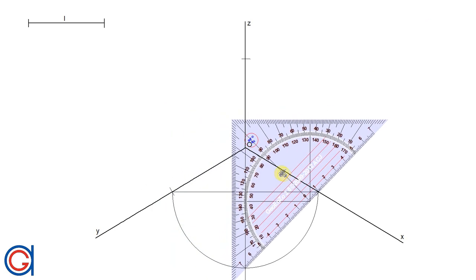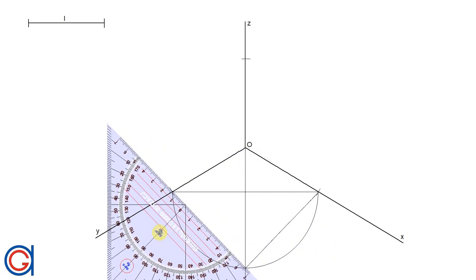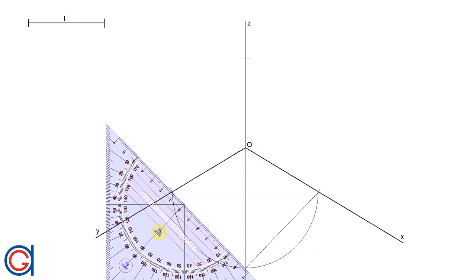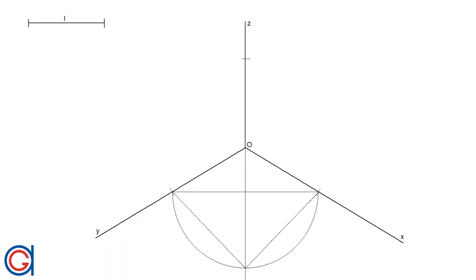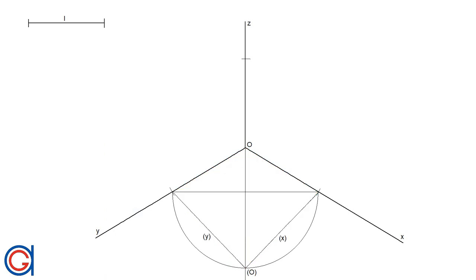Now we are going to join this point O in brackets with both ends of the horizontal line as can be seen here. These two lines, which we will call X in brackets and Y in brackets, represent the real magnitudes of the X and the Y axis, highlighted here with red triangles to show that they are all the same length.